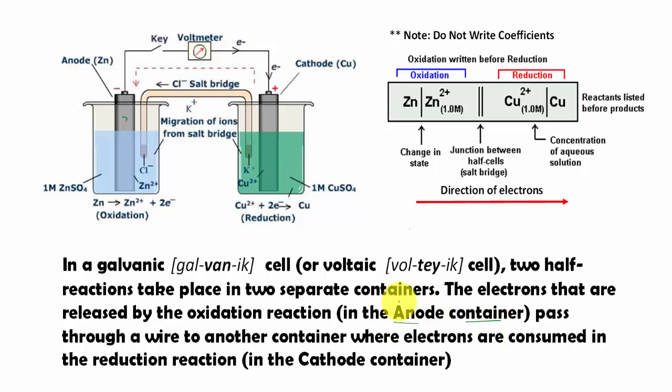The anode consists of a metal that is producing an electron. The electron passes through a wire to another container where the electrons are consumed in the reduction reaction. This is a separate container called the cathode container. In the cathode we have reduction, in the anode we have oxidation. Oxidation is releasing electrons, reduction is gaining electrons.